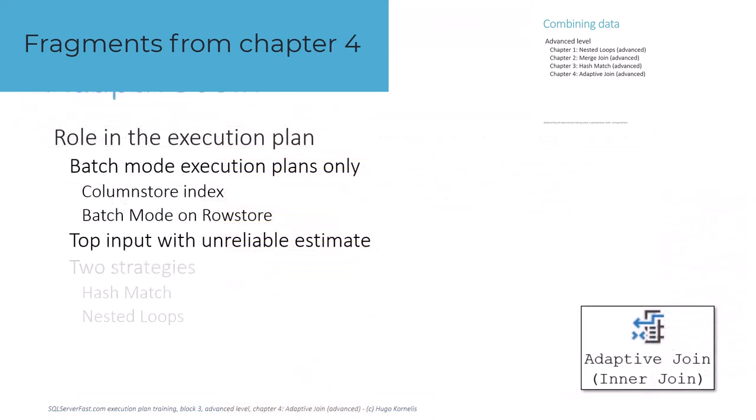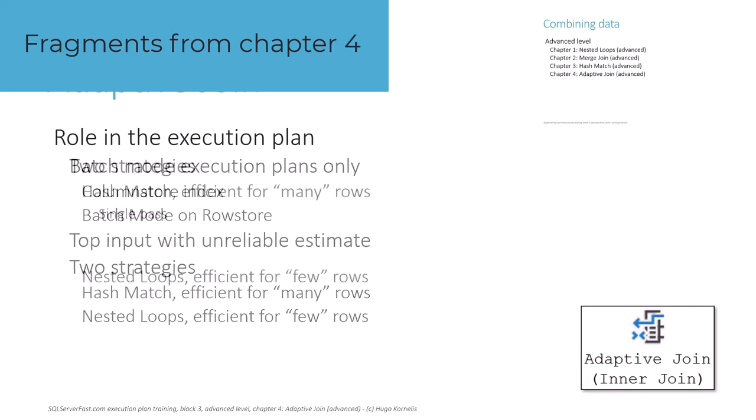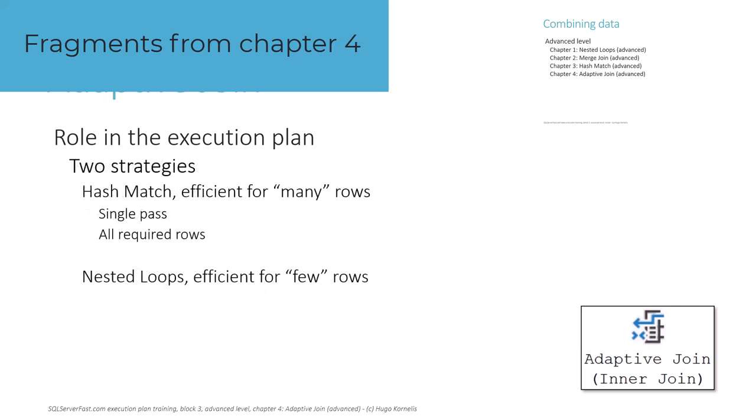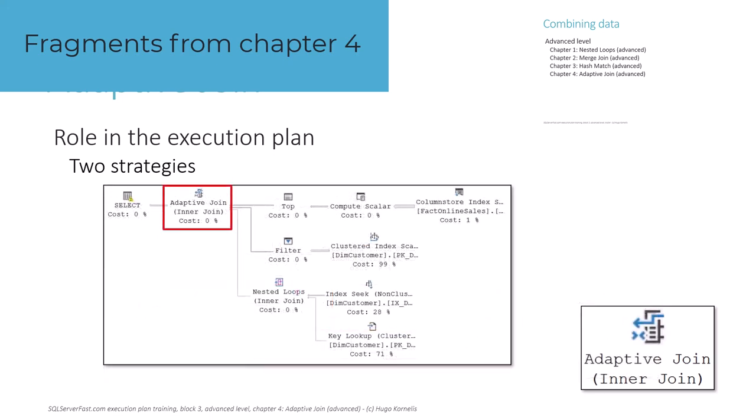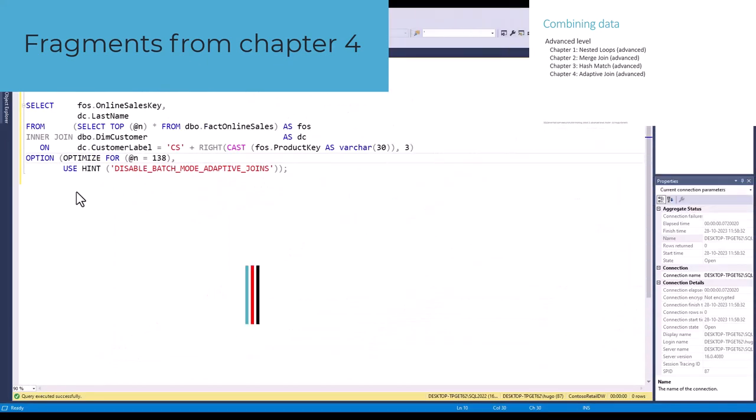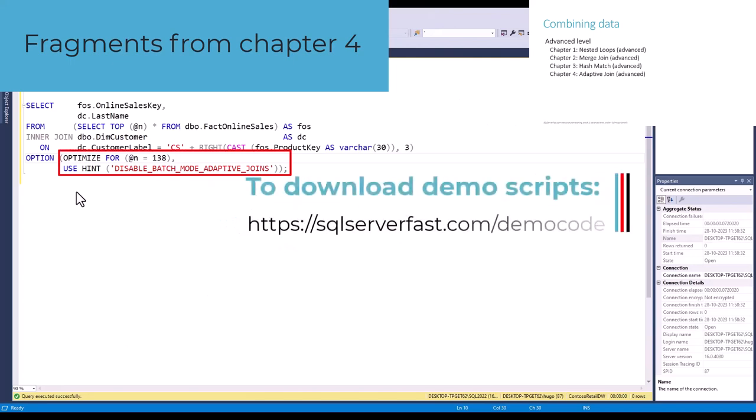The last part of this chapter is devoted to a discussion on the types of execution plans that would benefit from an adaptive join. Sadly, the optimizer currently is rather limited. It only actually chooses the adaptive join in the most basic cases and not in more complex situations that would also benefit from this operator.